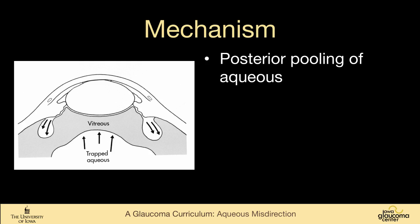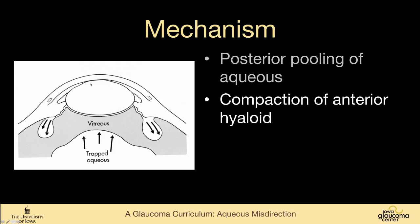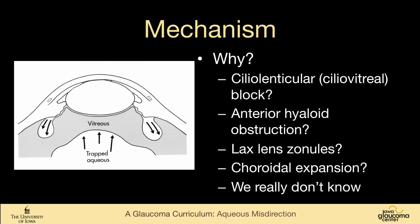The key thing to remember is that there is aqueous within and behind the vitreous, and that the anterior vitreous becomes compressed and therefore relatively impermeable. The anterior chamber is flat with no real central chamber. This compaction of the anterior hyaloid has been called cilio-lenticular block. Some people wonder if there's anterior hyaloid obstruction, lax zonules, or choroidal expansion — we really don't know exactly what's going on in this disease.